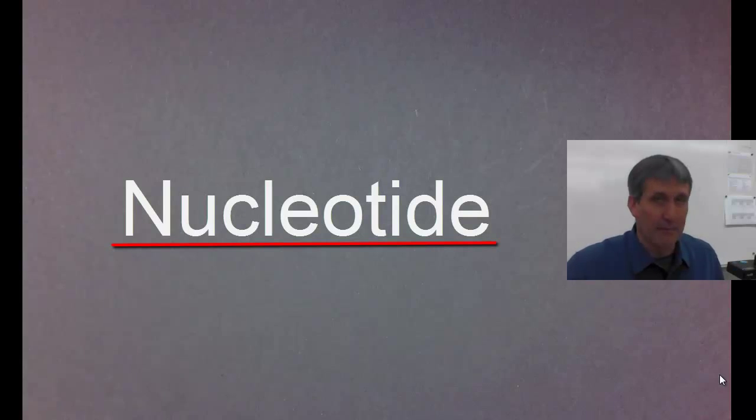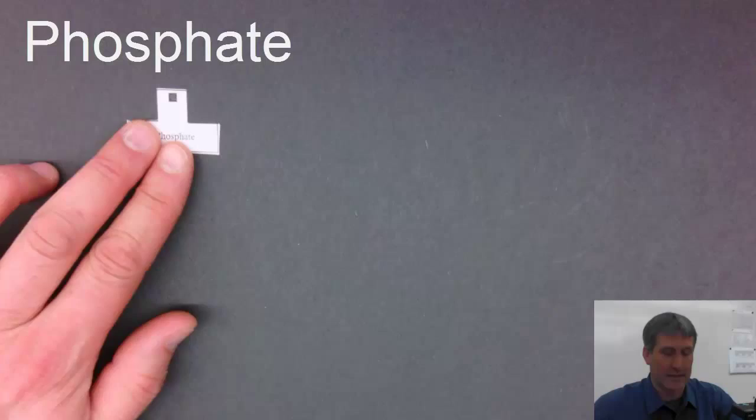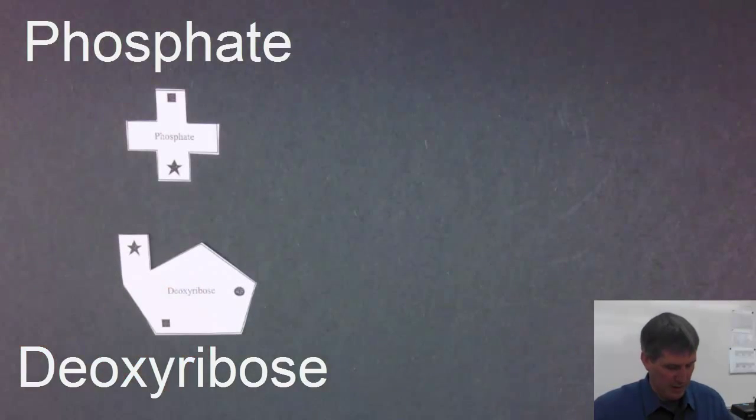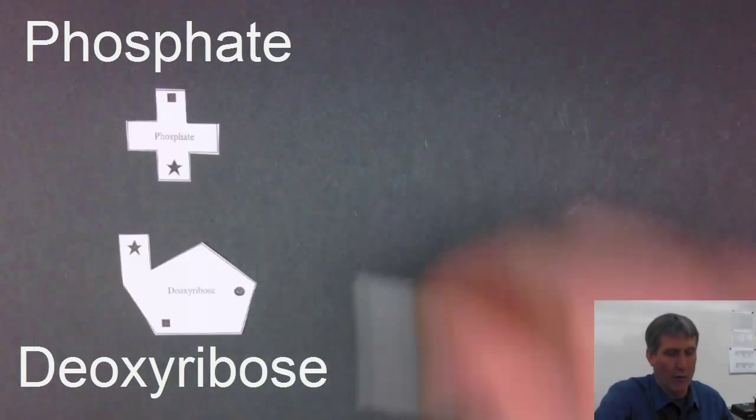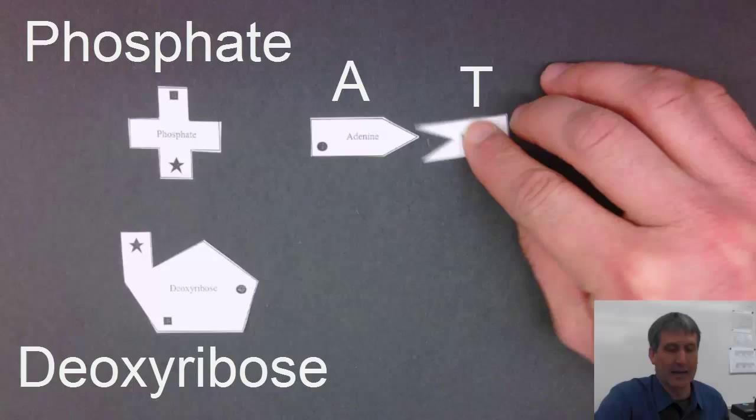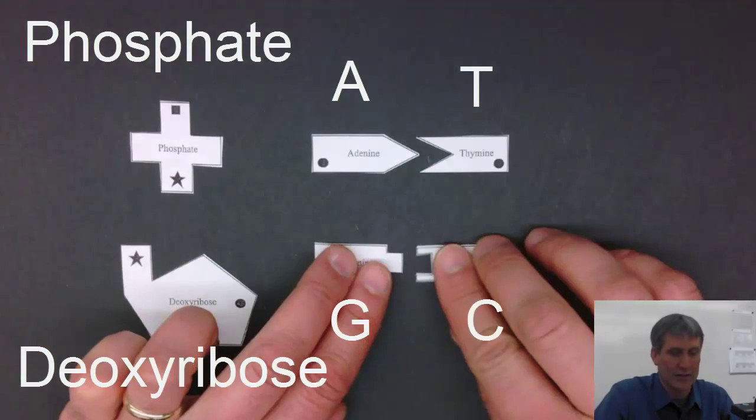These are the parts that make up a DNA nucleotide. You have a phosphate, a deoxyribose sugar, and one of four bases: adenine, thymine, guanine, or cytosine.